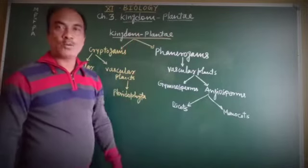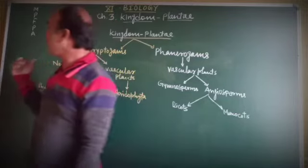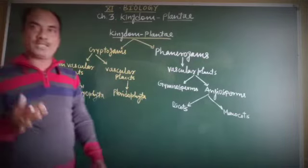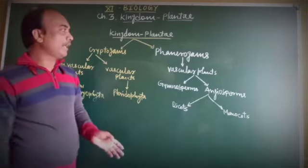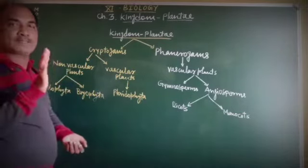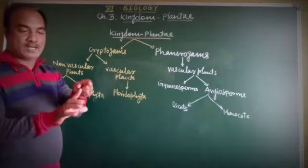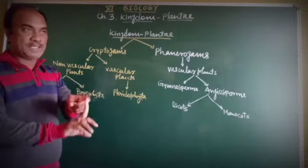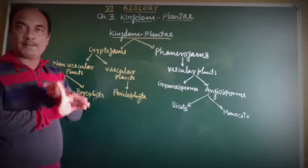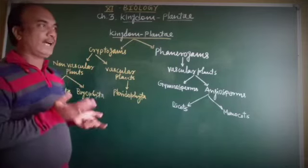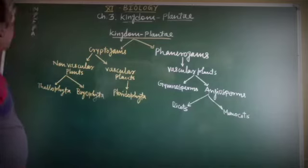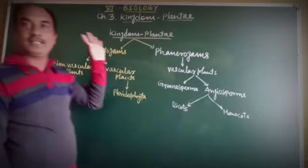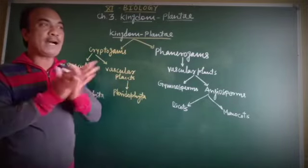We are studying the classification of organisms according to their similarities and differences. Organisms are classified into various kingdoms — that is the five kingdom system: Kingdom Monera, Protista, Fungi, Animalia, and Plantae. These are the five kingdoms.